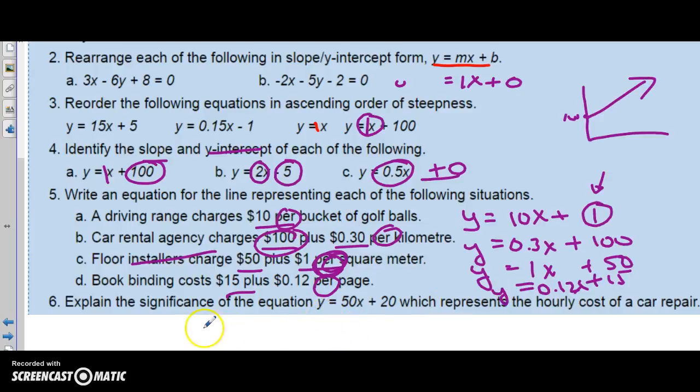Explain the significance of the equation where it's an hourly cost of a car repair. So we're going to look at this as a car repair. What's fixed, what's variable? This is fixed. If I show up, $20 is where you start. That's your intercept. And we're going up over 1, up 50 each time. So if I was there for an hour, I'd charge $50 extra, so it would be $70. So this would be your fixed cost. $20 is your fixed cost. And $50 is your rate per hour, your cost per hour. Hope that makes sense. Any questions, fire me an email. Take care. Thanks.